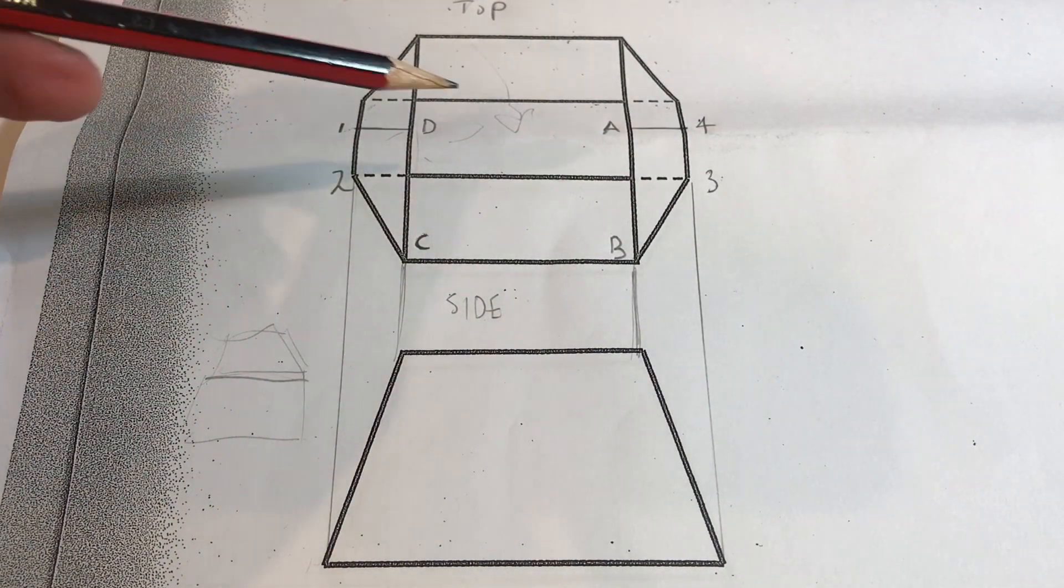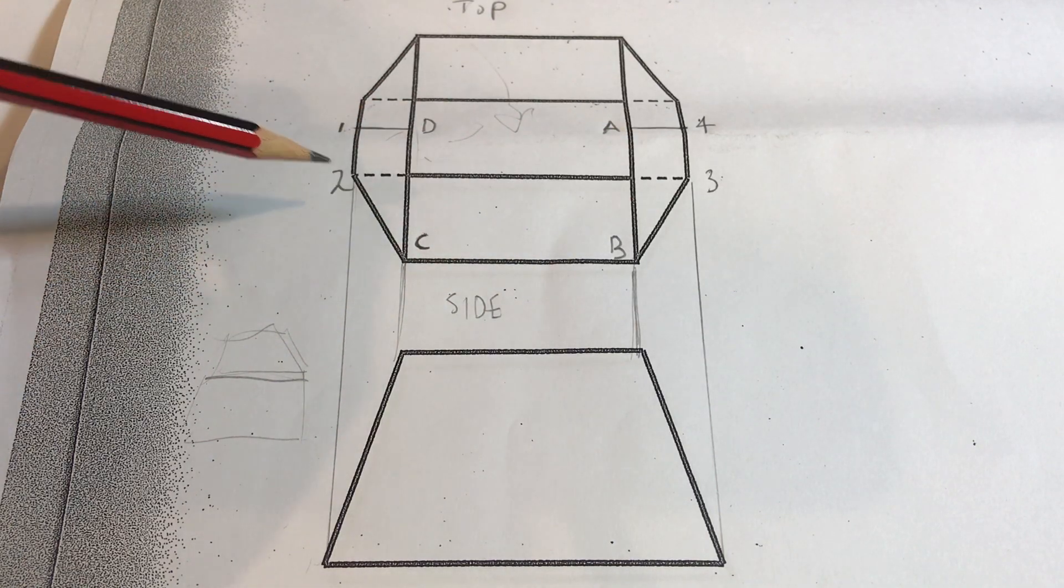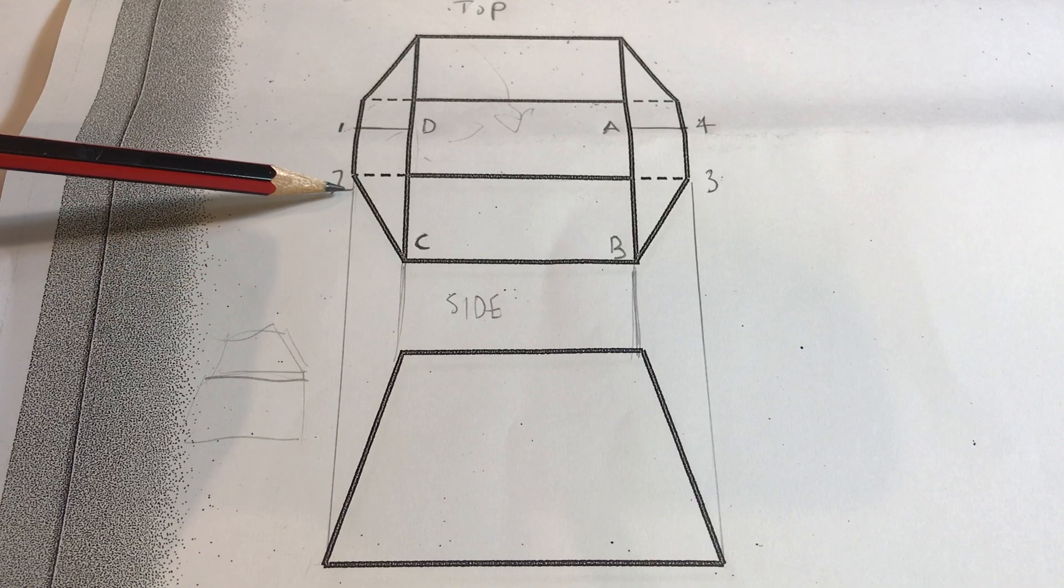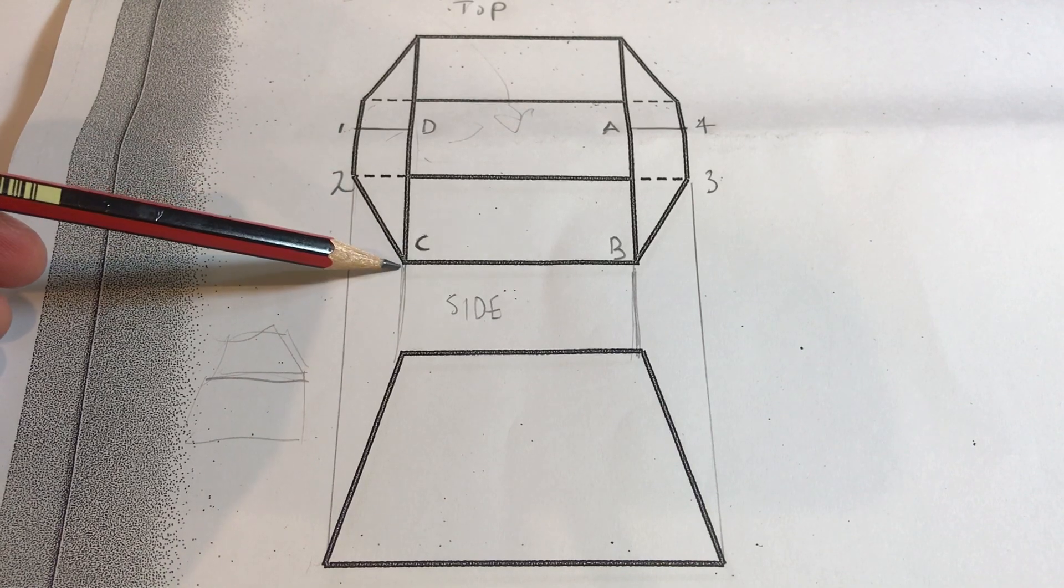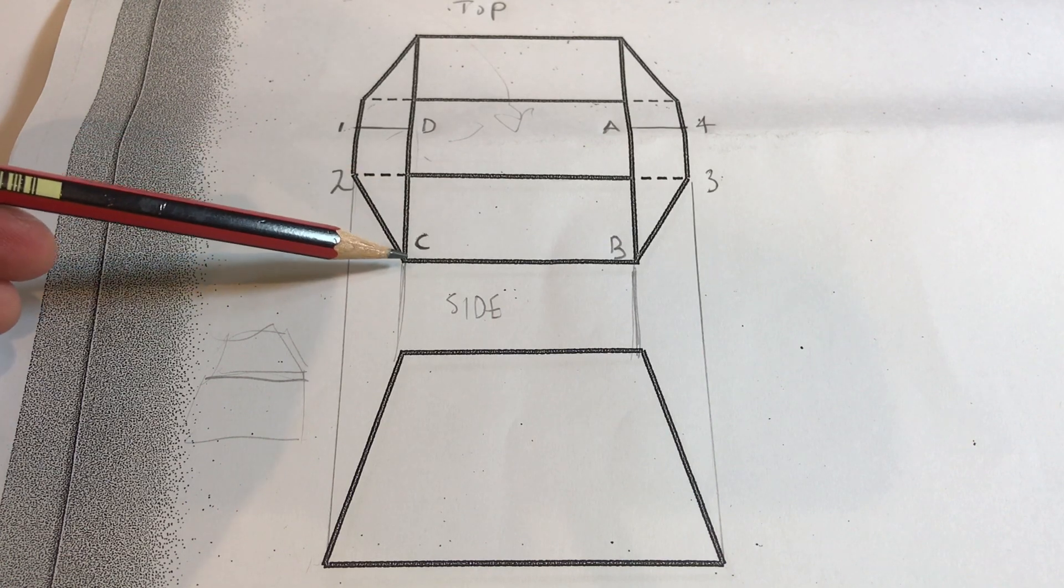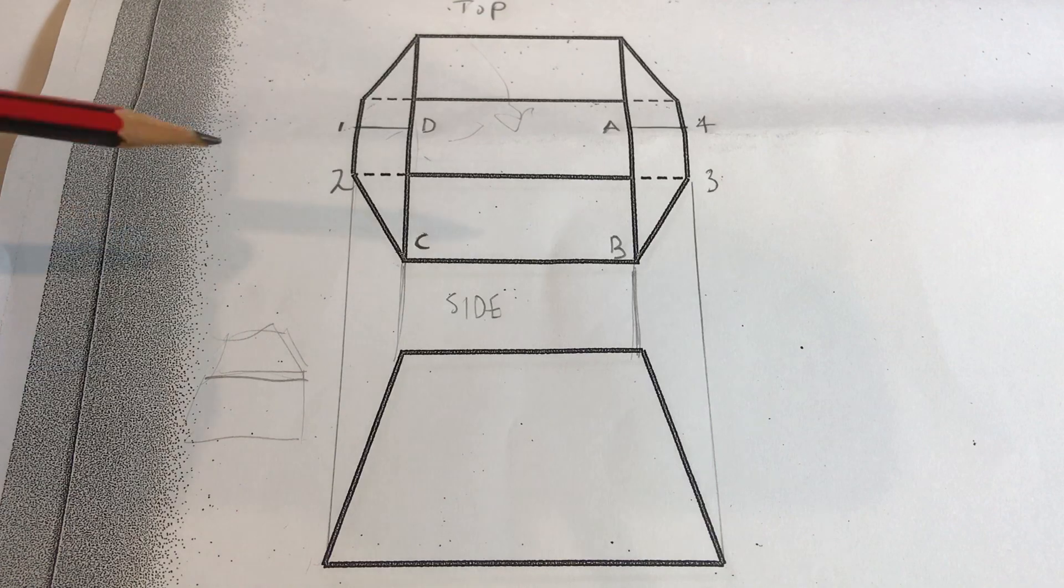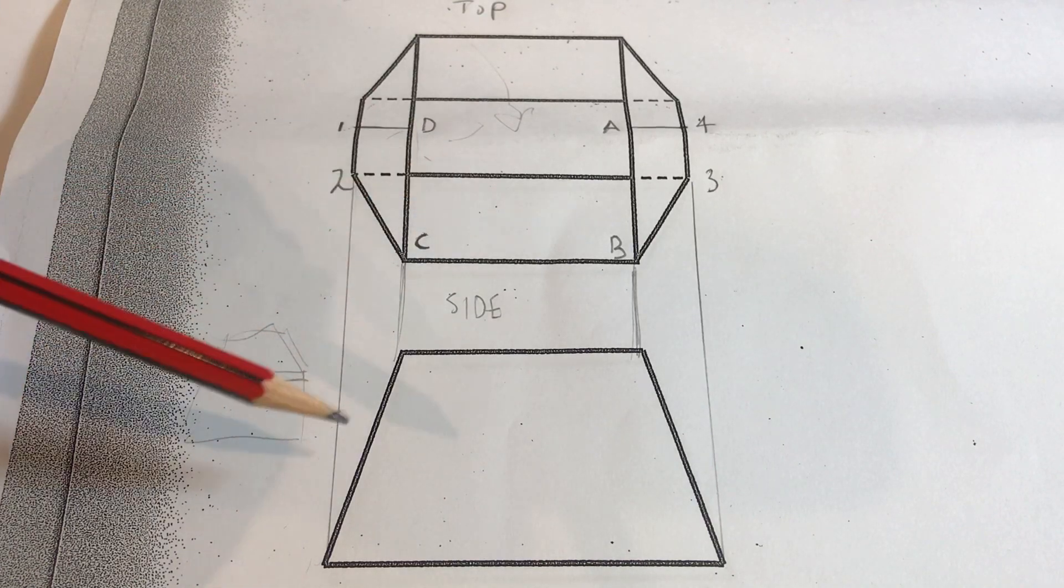You do to get to the point where you're kind of comfortable doing this labeling bit, but remember that you shouldn't have more than one number or one letter where things are coming together. If you've got more than one sitting there you've gone haywire.